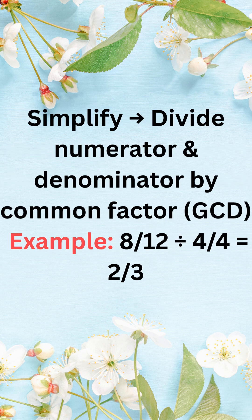To simplify or find an equivalent simpler fraction, divide numerator and denominator by the same factor. For example, eight twelfths divided by four over four gives two thirds.